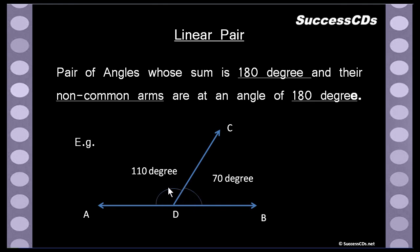Here, AD and DB form a straight line, which is at an angle of 180 degrees. Since the non-common arms are at 180 degrees, it is understood that angle ADC plus angle BDC will have a sum of 180 degrees. Here we also see that 110 plus 70 is 180 degrees — because the non-common arms AD and BD are at an angle of 180 degrees. Such a pair of angles is called a linear pair.